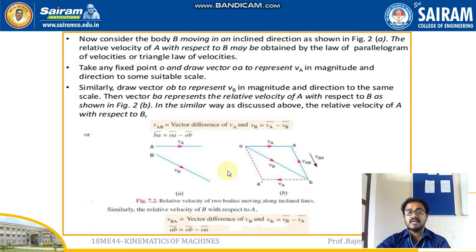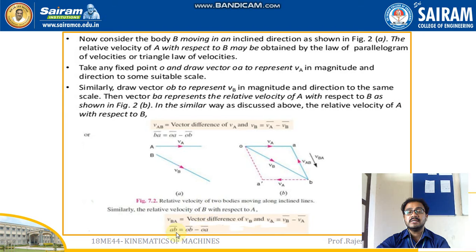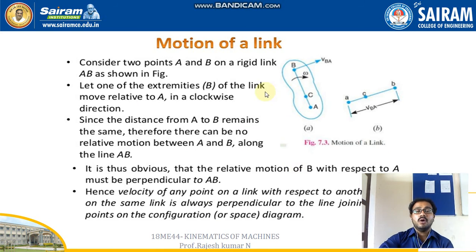In a similar way, the relative velocity of B with respect to A, VBA, is the vector difference of VB and VA, equal to VB̅ minus VA̅. In notation: AB̅ = OB̅ − OA̅. Now we will discuss the next topic: motion of a link.